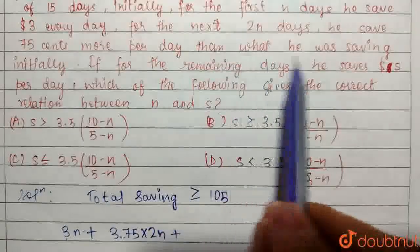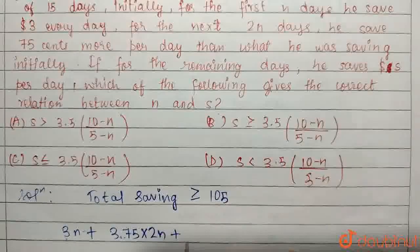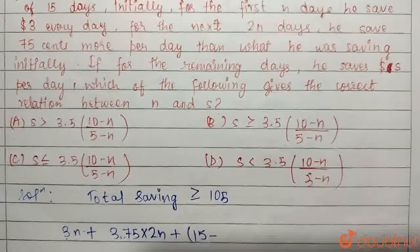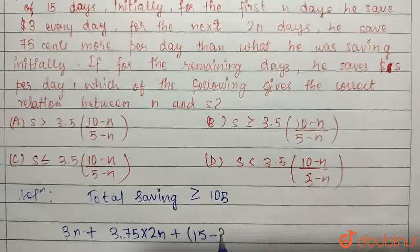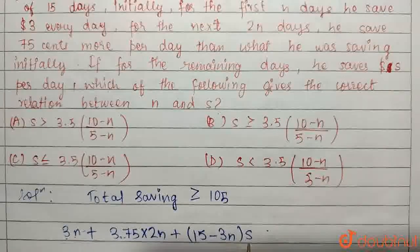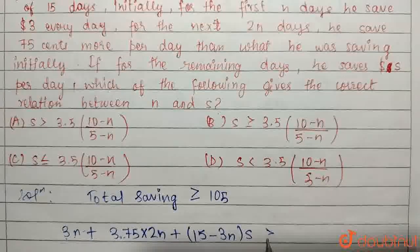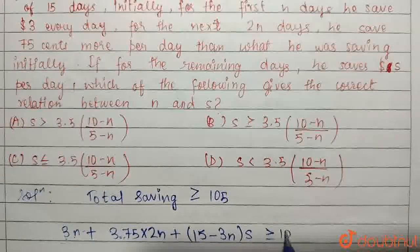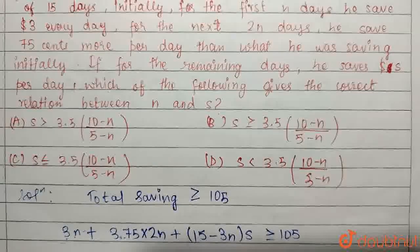And for the remaining days he saves S dollars. So the remaining days would be 15 minus 2N plus N, 3N. He saves S dollars, which is our total savings, and this total savings is greater than or equal to 105.